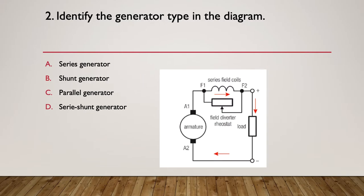Question two: identify the generator type in this particular diagram. Is it A, a series generator; B, a shunt generator; C, a parallel generator; or D, a series-shunt generator. Here's your hint: follow out the current path. Where's the current paths?